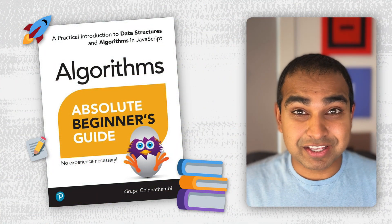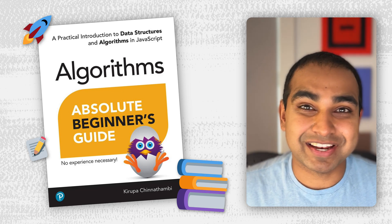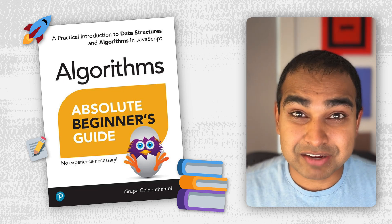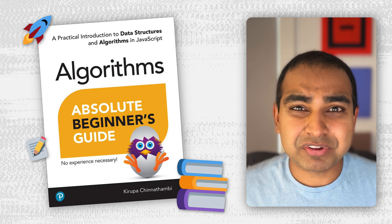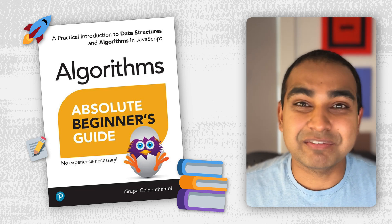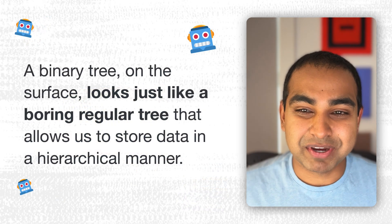Now before we go on, if you want a friendly yet comprehensive look at data structures and algorithms, my best-selling book on this topic, Algorithms Absolute Beginner's Guide, is just what you need. Look for it in physical bookstores and online bookstores, or search in Google to learn more about it.